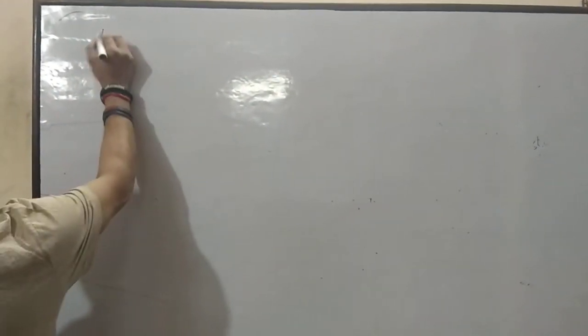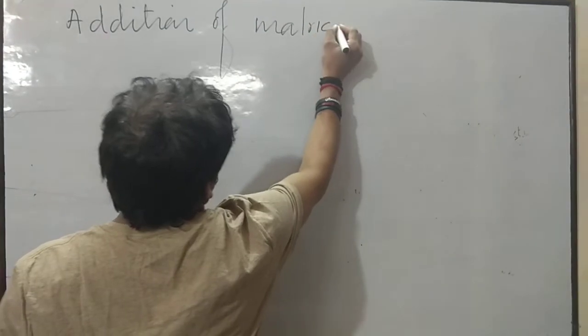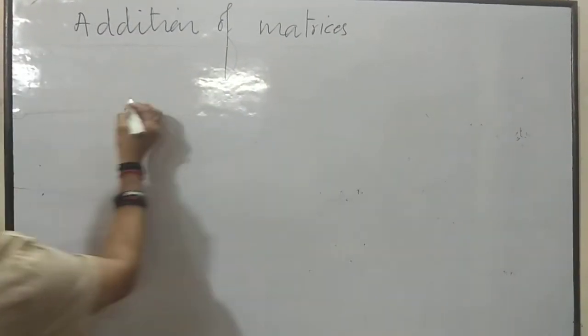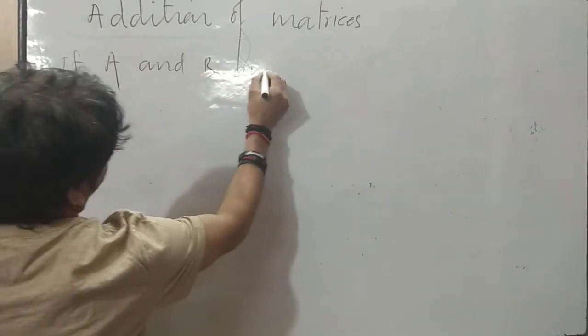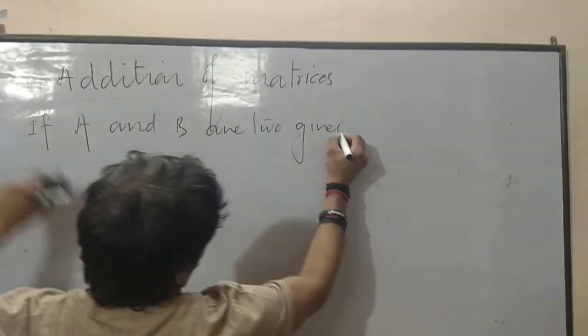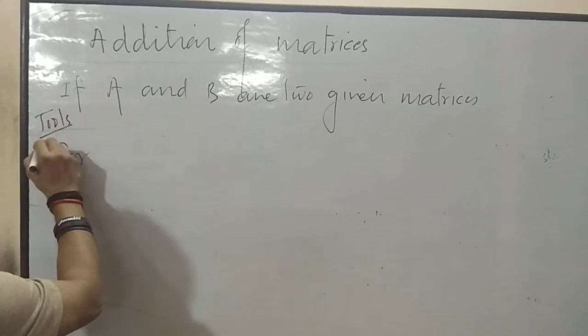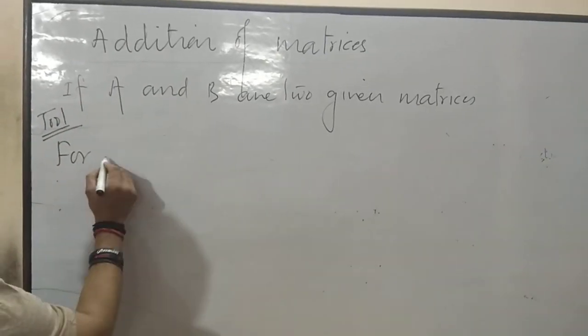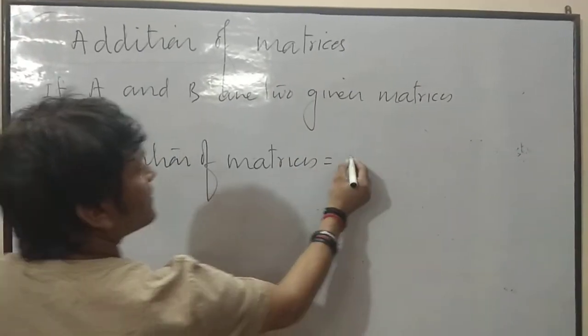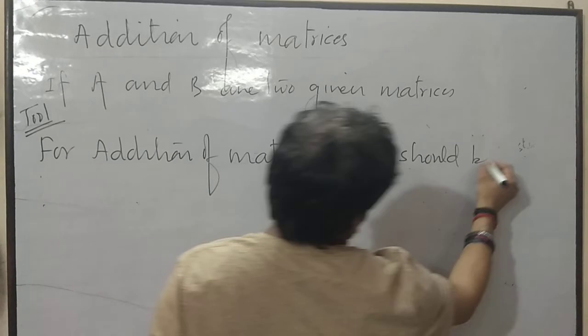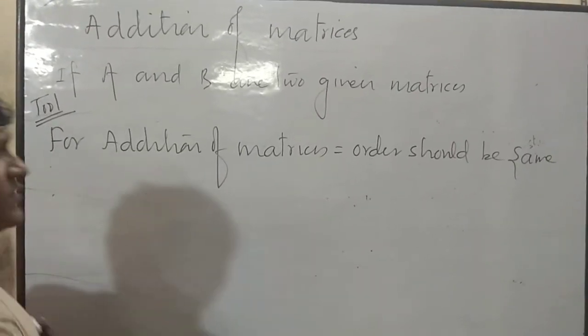Now, addition of matrices. Addition of matrices. From here you can start your exercise. If A and B are two given matrices. Rule for addition of matrices: order should be same. Whenever you are going to add two matrices, both matrices will be of same order.